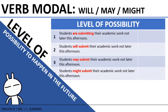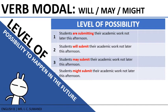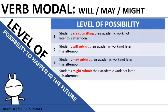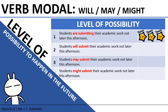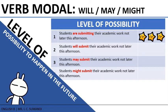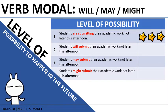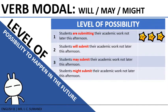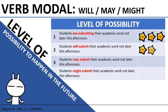Verb to be plus verb-ing has the context of actions guaranteed to happen in the future — 100% possibility because it is already planned. Number two: 'Students will submit their academic work not later than this afternoon.' Will has possibility to happen if the person has the intention to do it, so most likely 50% to 75% possibility.